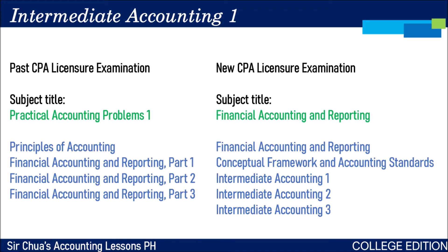In the new CPA board exam syllabus, Practical Accounting Problems 1 is now renamed as Financial Accounting and Reporting. In the new curriculum mandated by the Commission on Higher Education, Financial Accounting and Reporting covers: Financial Accounting and Reporting (fundamentals), Conceptual Framework and Accounting Standards, and then Intermediate Accounting Parts 1, 2, and 3. The content of Intermediate Accounting 1, 2, and 3 did not change from the old FAR Parts 1, 2, and 3 — there was just a restructuring because more of the theories are now discussed in Conceptual Framework and Accounting Standards, which serves as an introduction to all financial accounting standards so students are not surprised when those standards appear in Intermediate Accounting.